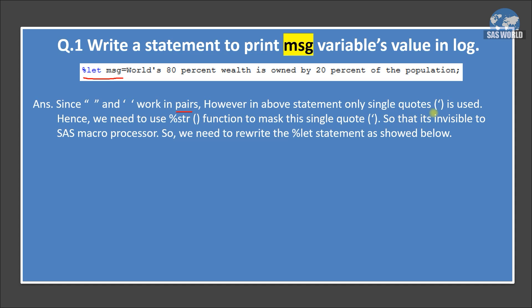in above statement, only single quote is used. So you can see here in world's, we are using only one quotation and SAS would look for the another quotation mark because it works in pairs. So there is a problem because in this, there is no other quotation marks. So SAS would not resolve the value of MSG macro variable.